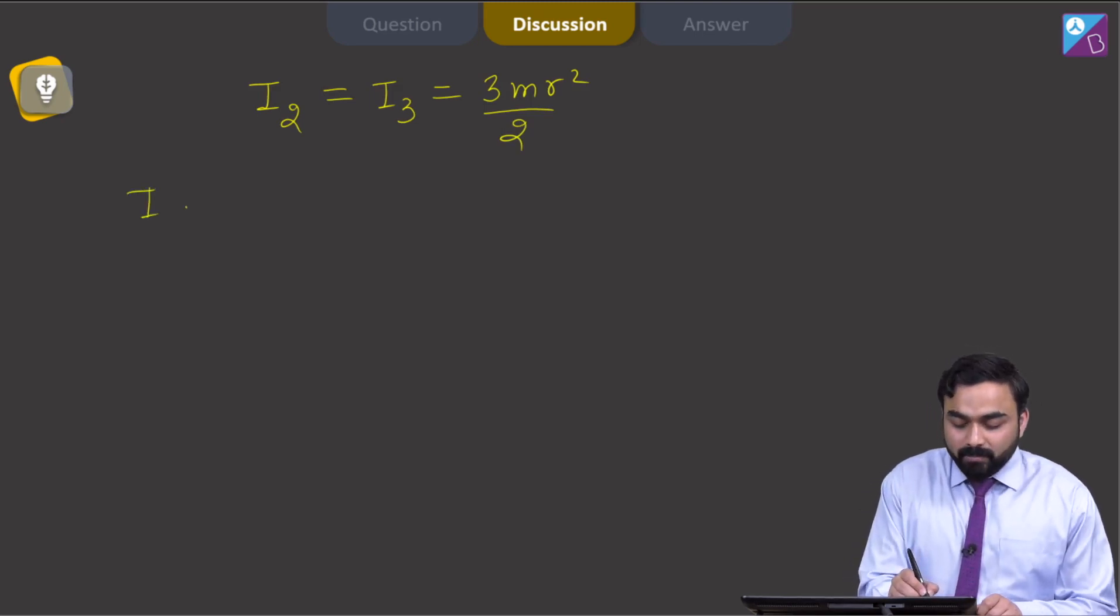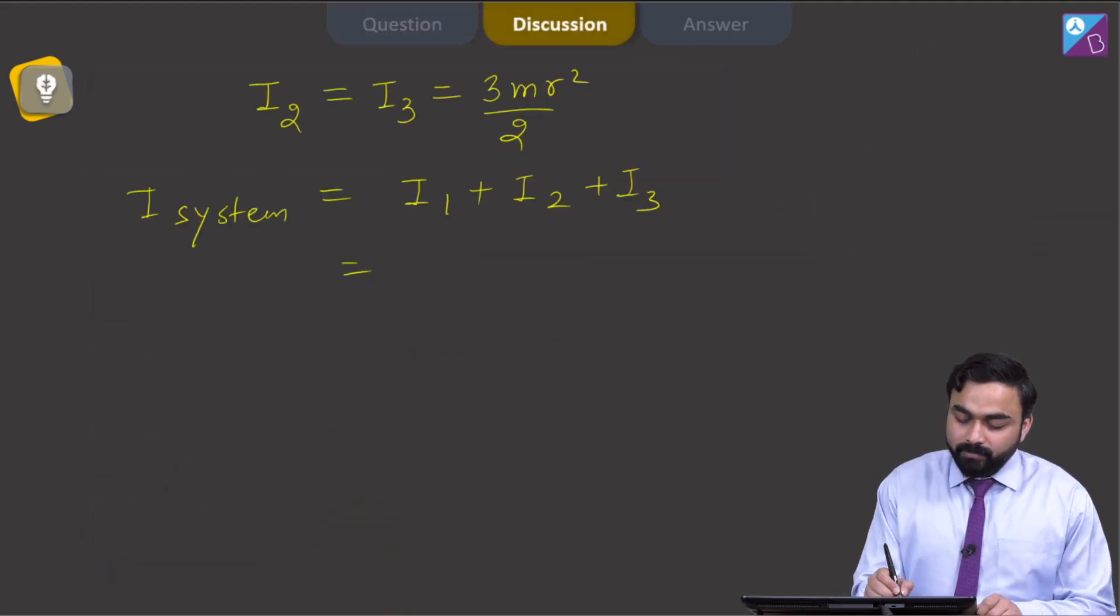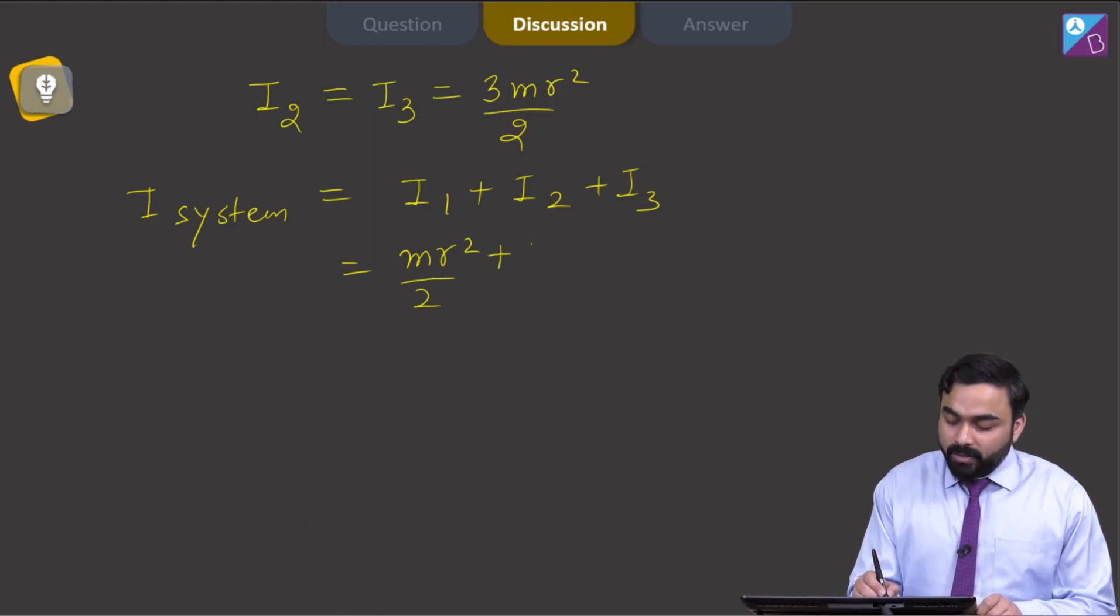For the system, if I need to calculate the moment of inertia, it will be I₁ + I₂ + I₃. I₁ is mr²/2, I₂ is 3mr²/2, and I₃ is also 3mr²/2.